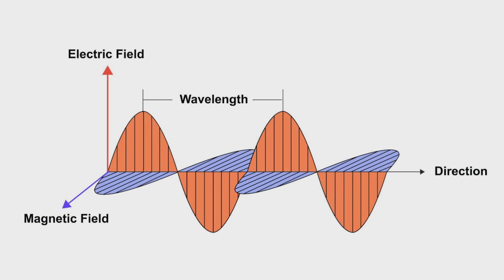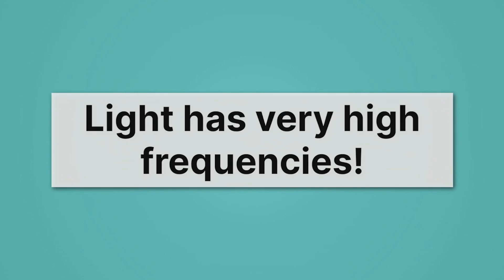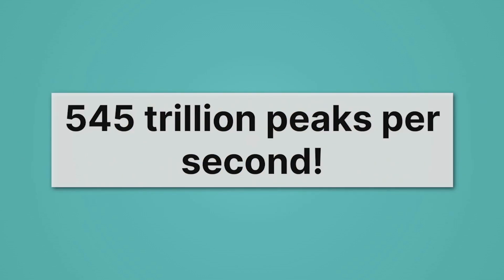Let's return to our schematic of light. Remember that light is moving — in this representation, it's moving to the right where we see the arrow labeled direction. Light goes crazy fast, and because of that, peaks pass by really often. So light has very high frequencies. How high? Green light has a frequency of 5.45 times 10 to the 14 hertz. That number is mind-bogglingly large — it's the same as saying 545 trillion peaks per second. So the frequency of light: super high.